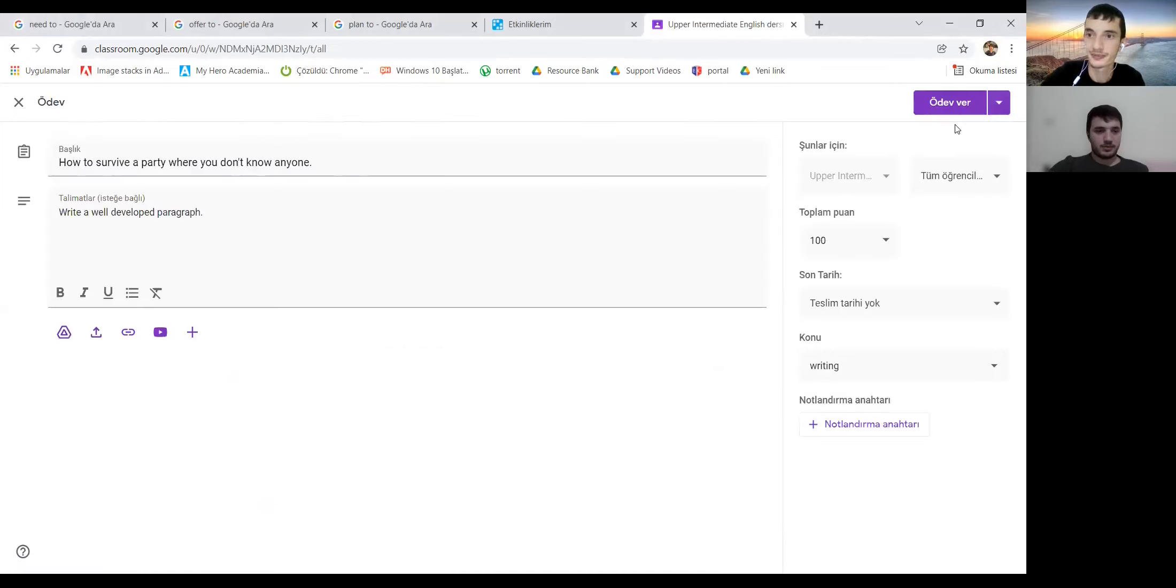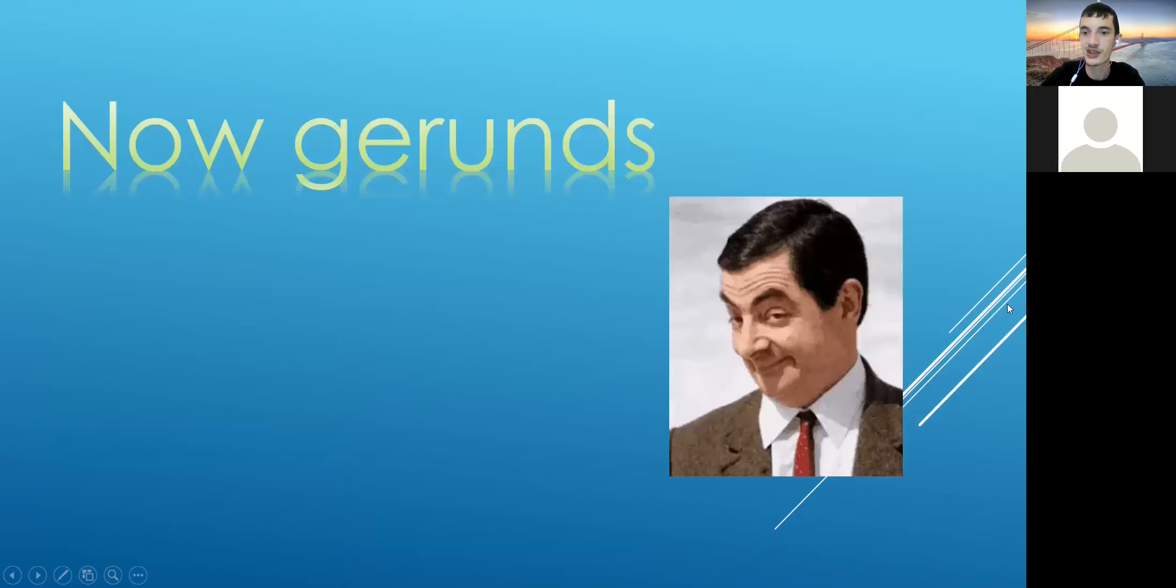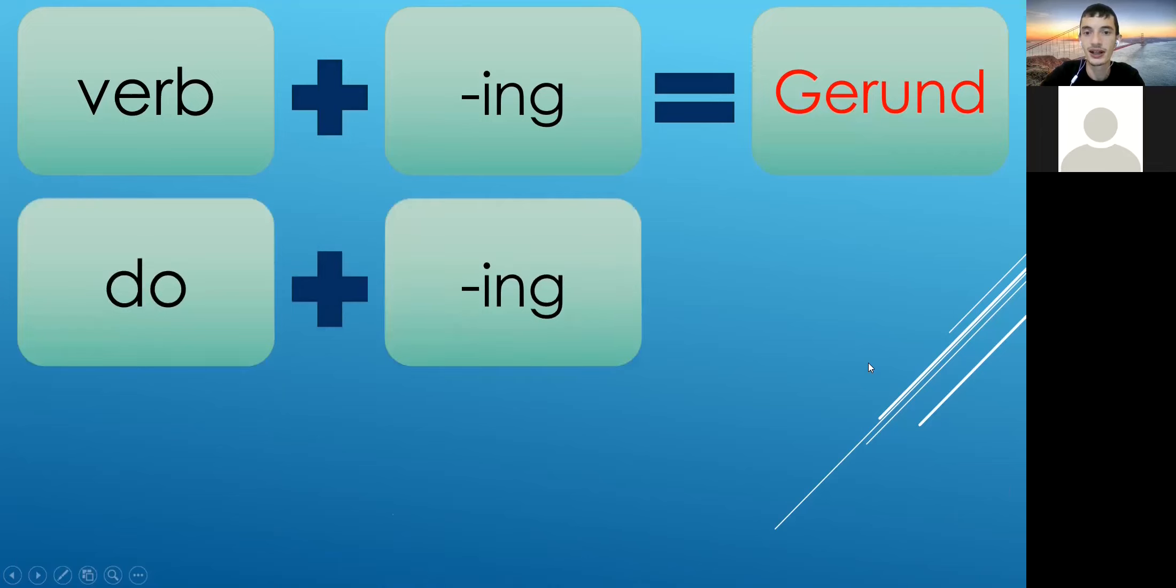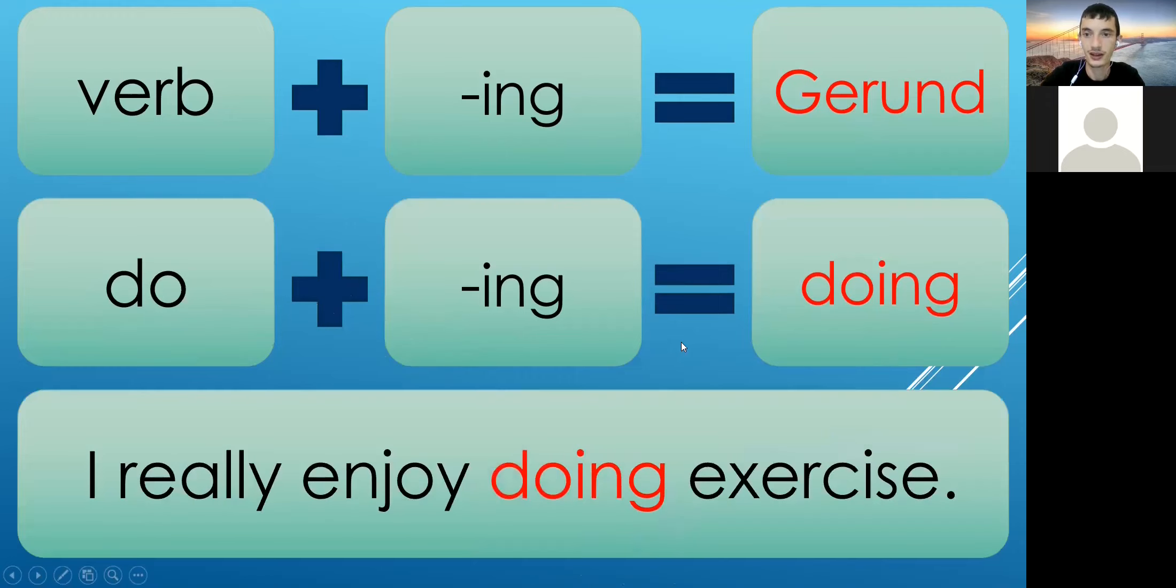Okay, now we will see some gerunds together. How do we form gerunds? So first, what do we have here? First verb, exactly. First verb, then we will add -ing and we will have the gerund in the end, okay nice. Next one, for example: do-ing, and what is it going to be? Doing, doing exactly. And next one, let's see our example. What's in our example? I really enjoy doing exercise.